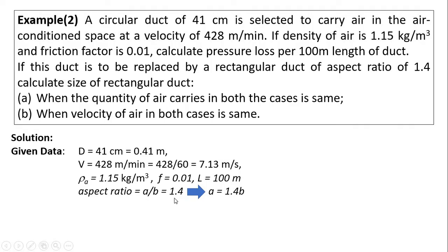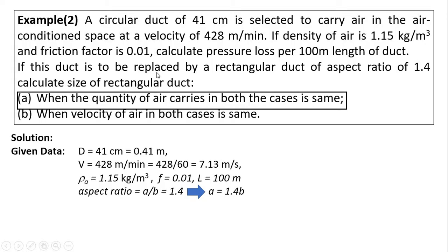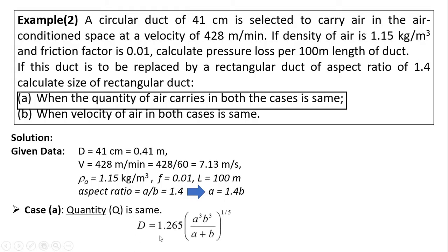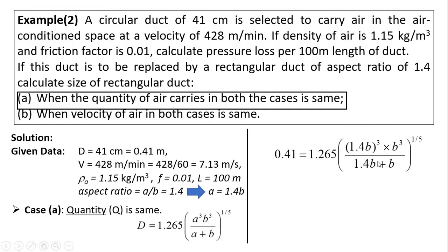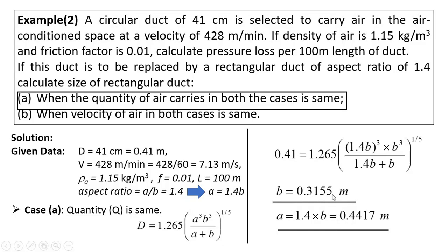With aspect ratio a/b = 1.4, we can write a = 1.4b. For the first criteria — when quantity of air is the same in both ducts — we use the equivalent diameter formula. Diameter D is known; a is expressed in terms of b, so the only unknown is b. Solving gives b = 0.3155 m, and substituting back: a = 1.4 × b = 0.4417 m.